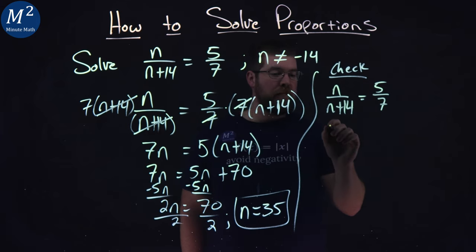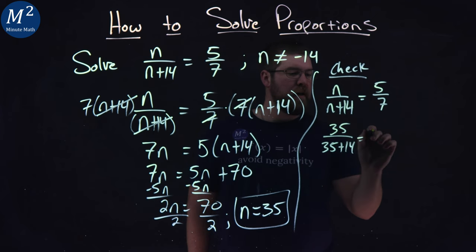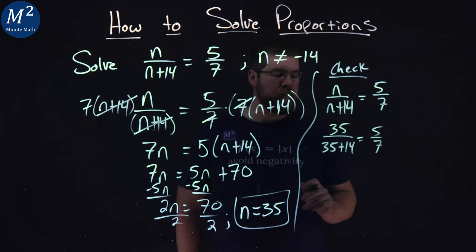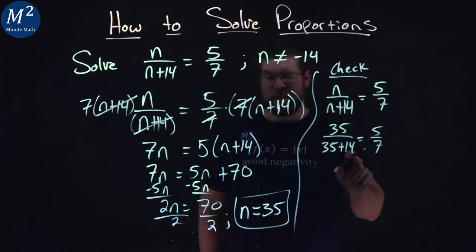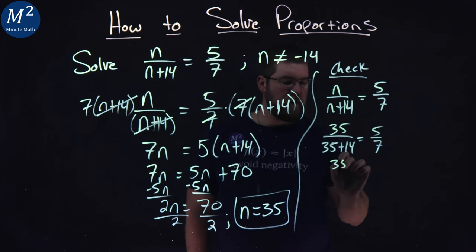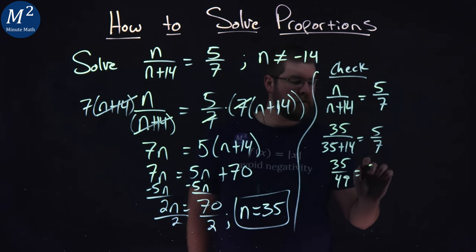And I'll plug 35 in for n. 35 over here, and 35 plus 14 equals 5 over 7. 35 plus 14 is 49, so we have 35 over 49 equals 5 sevenths.